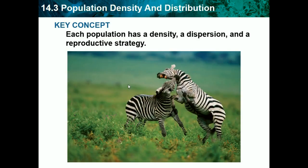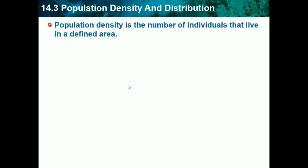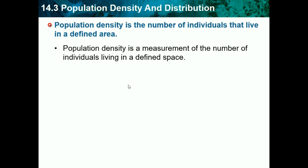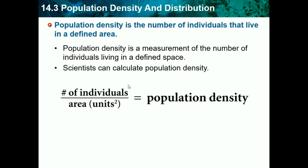Section 14.3: population density and distribution. The key concept is that each population has a density, a dispersion, and a reproductive strategy. Population density is the number of individuals that live in a defined area. We can calculate this as the number of individuals divided by the area.